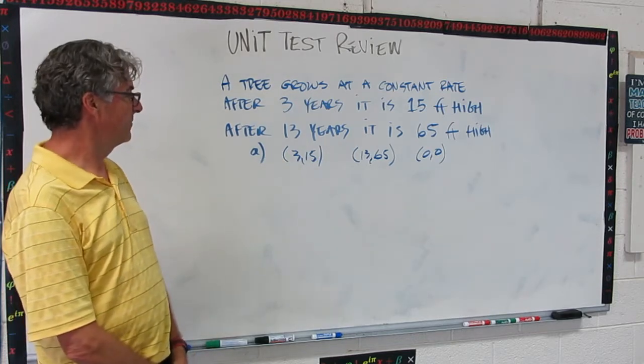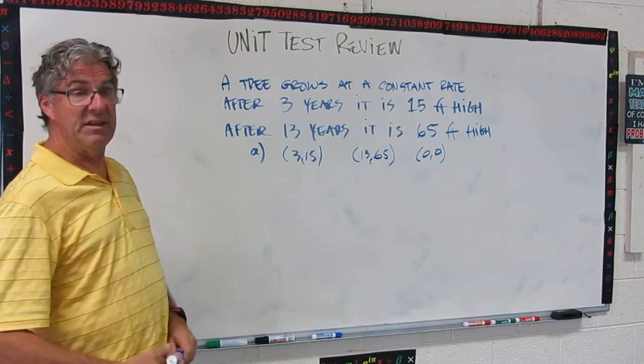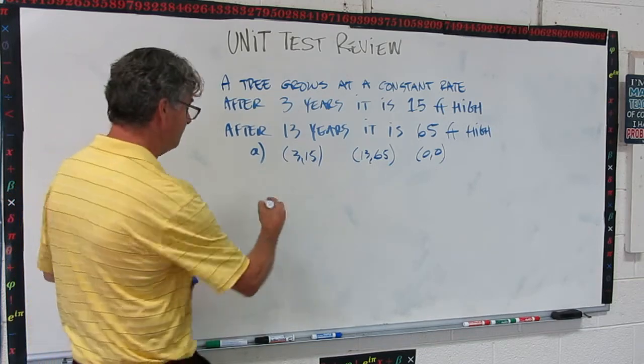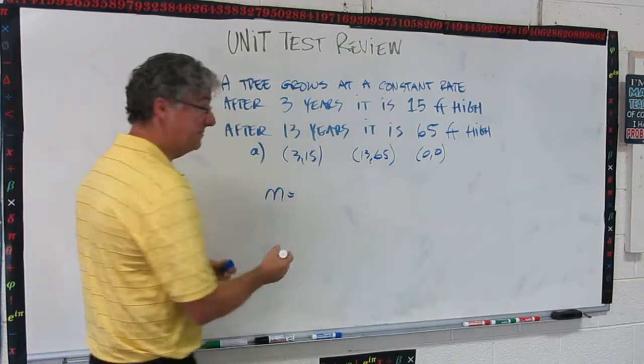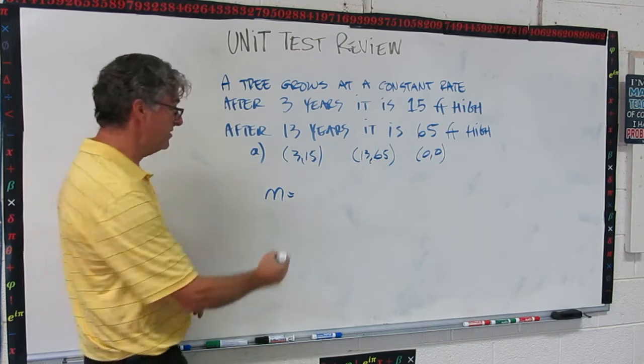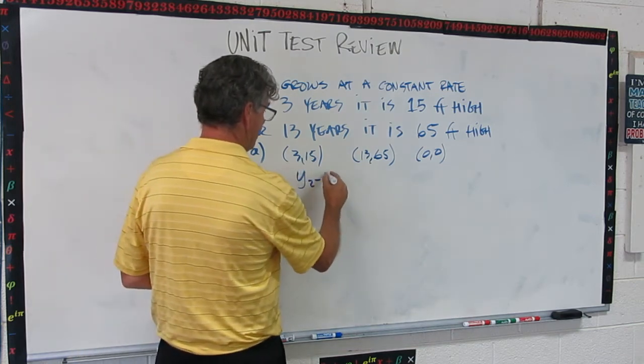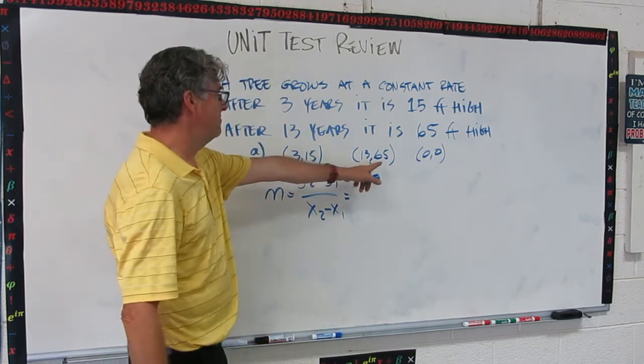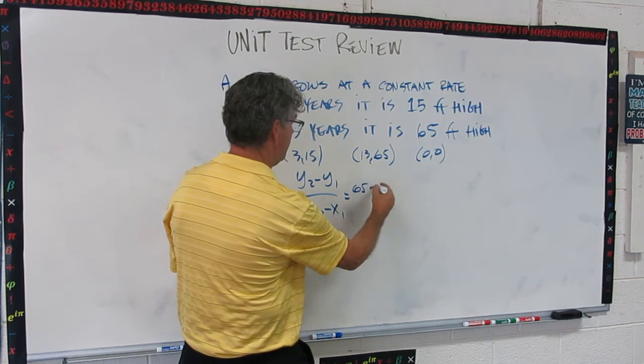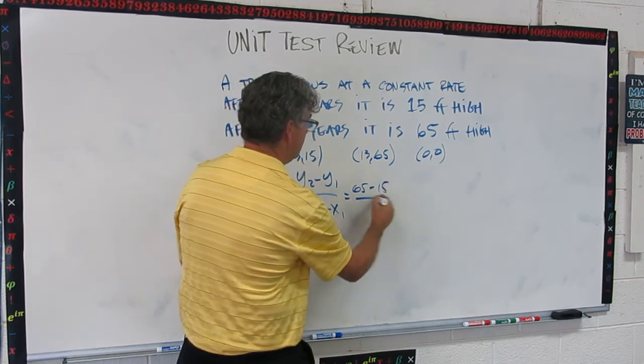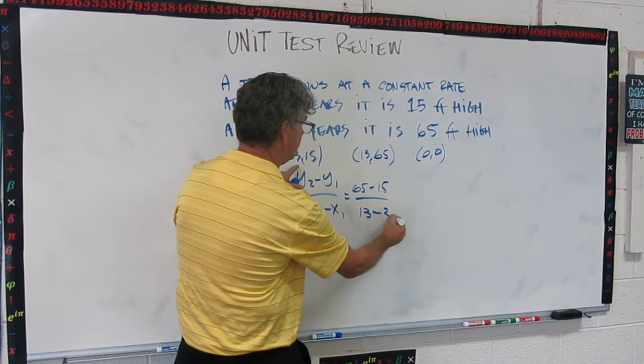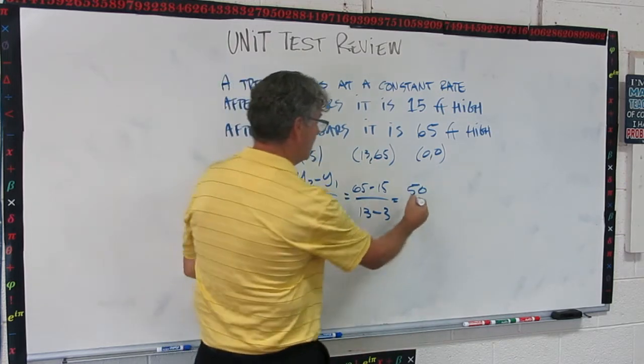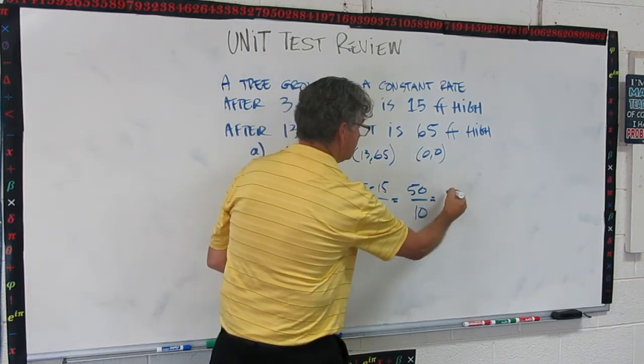So now let's come up with an equation for this tree. You've got to get your slope. Now, I know some of you have probably already done this in your head and you already know the slope, but let's use the slope equation. y2 minus y1 over x2 minus x1. So I'm going to call this one y2. So y2 is 65 minus y1, 15, over x2, 13 minus x1 is 3. Okay, so this becomes 50 over 10, which is 5.